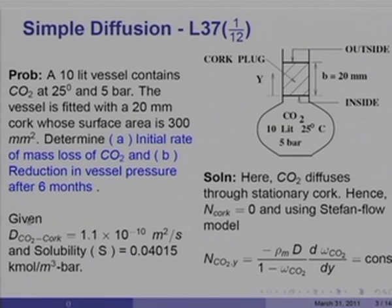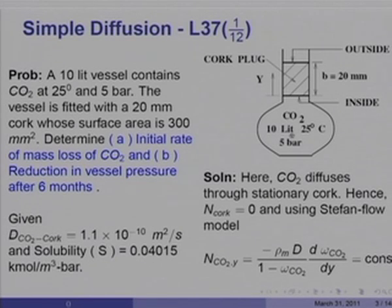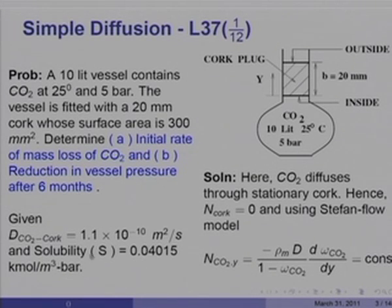You have been given the property data. The diffusivity of CO₂ in cork is 1.1 × 10⁻¹⁰ m²/s — a very small value. There is also a quantity called solubility. When CO₂ is in contact with the cork surface, the concentration of CO₂ at that inner surface assumes a certain value, quoted in terms of solubility as 0.04015 kmol/m³·bar. We shall use this value of S to determine the inside mass fraction of CO₂. The outside mass fraction is 0.